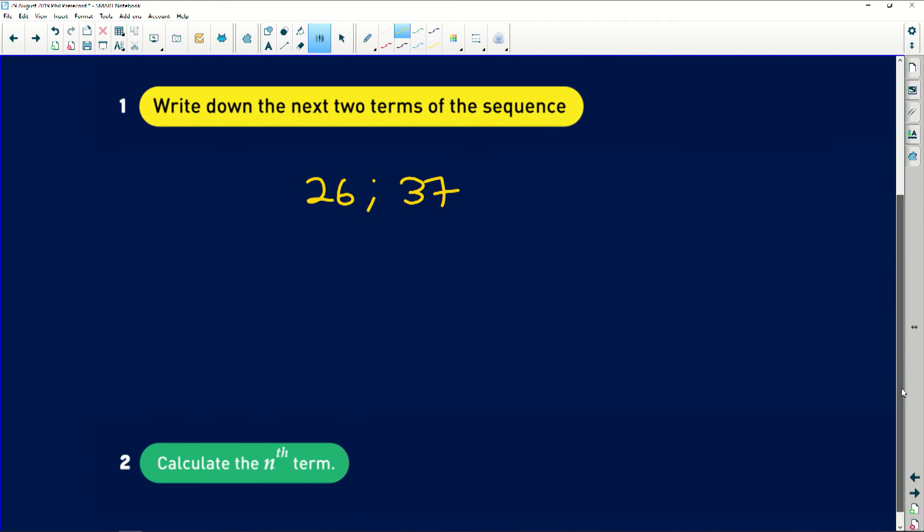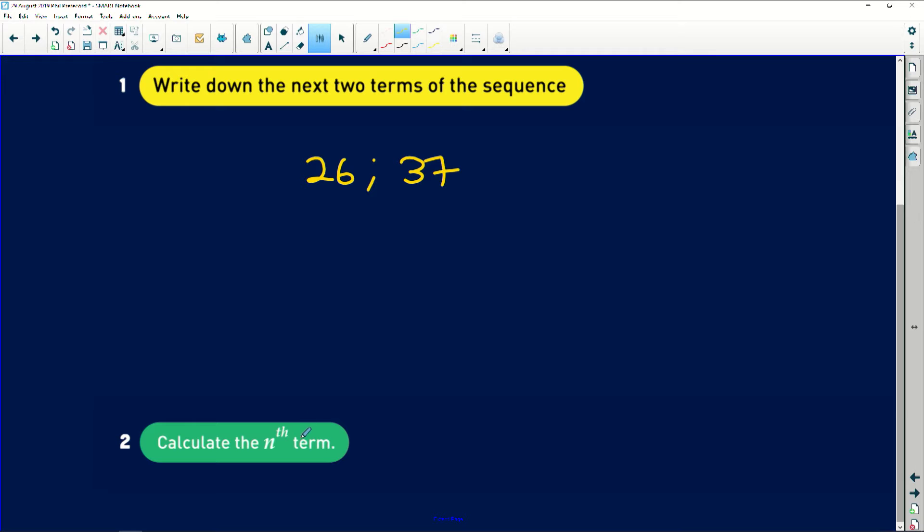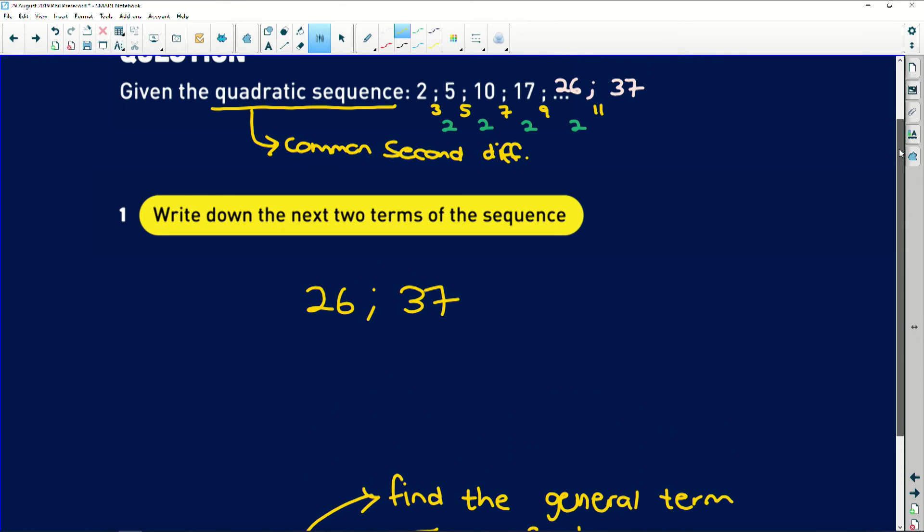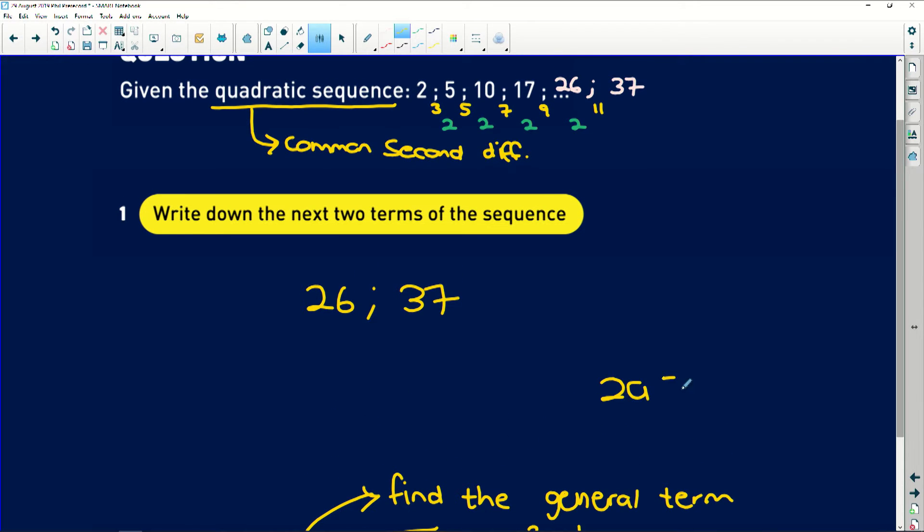So now it says calculate the nth term. This is just a fancy way of saying find the general term. Now remember immediately when you see quadratic function or equation, you should know it's an² + bn + c. Now remember, always, a is a very important number. In a quadratic sequence, your theory should tell you immediately 2a is equal to that second difference.